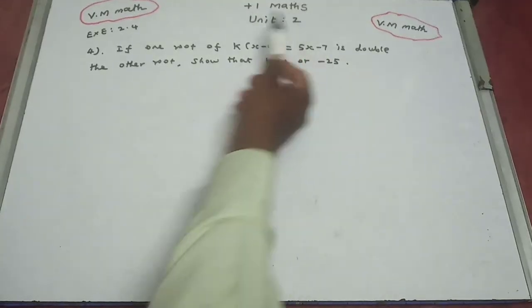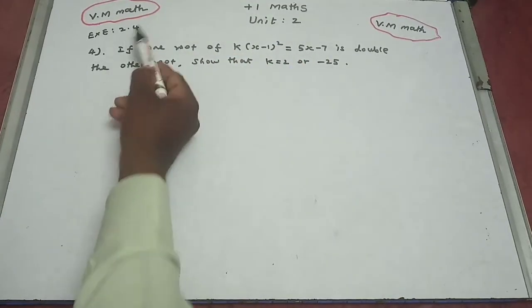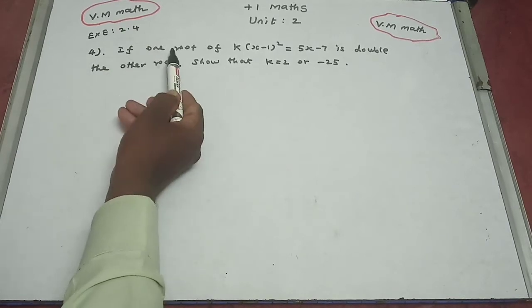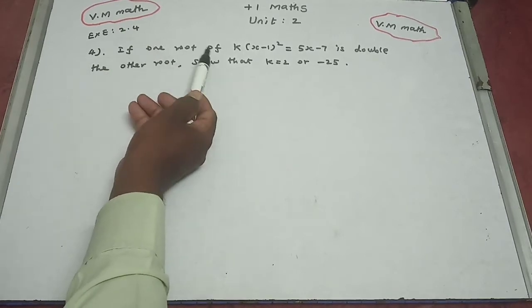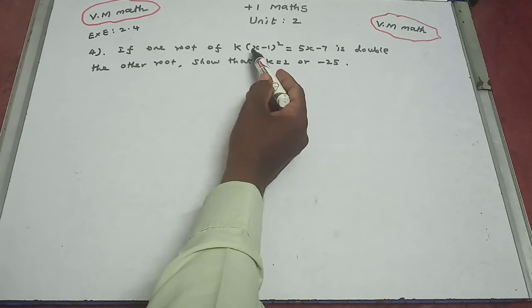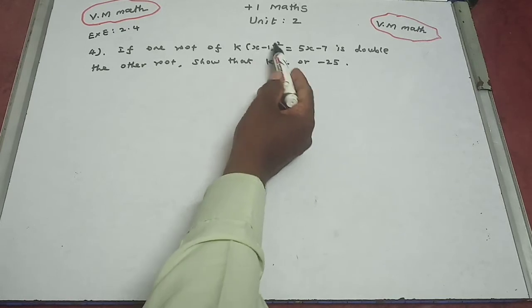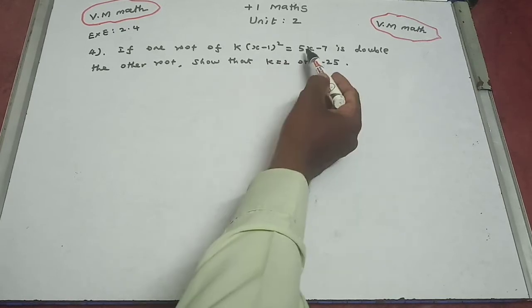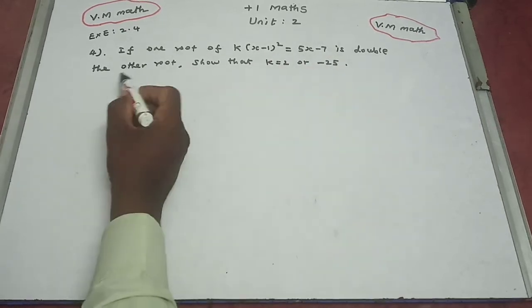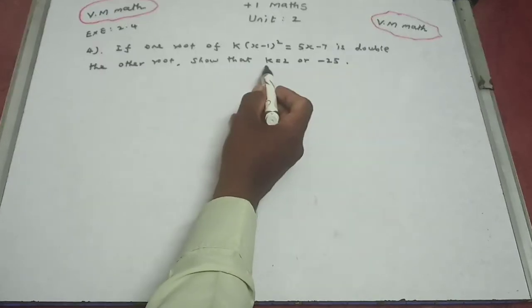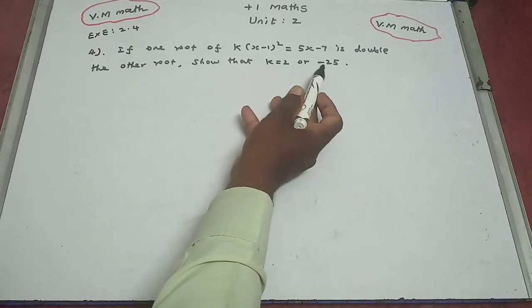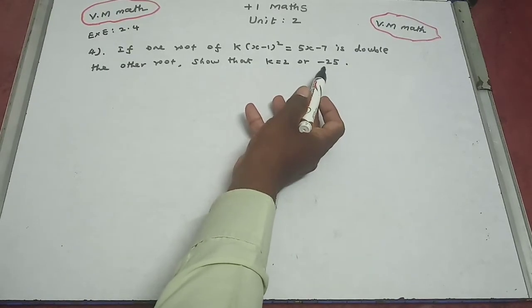Plus 1 max unit 2v x is 2.4. The fourth question: if one root of k(x-1)² = 5x - 7 is double the other root, show that k = 2 or k = -25.